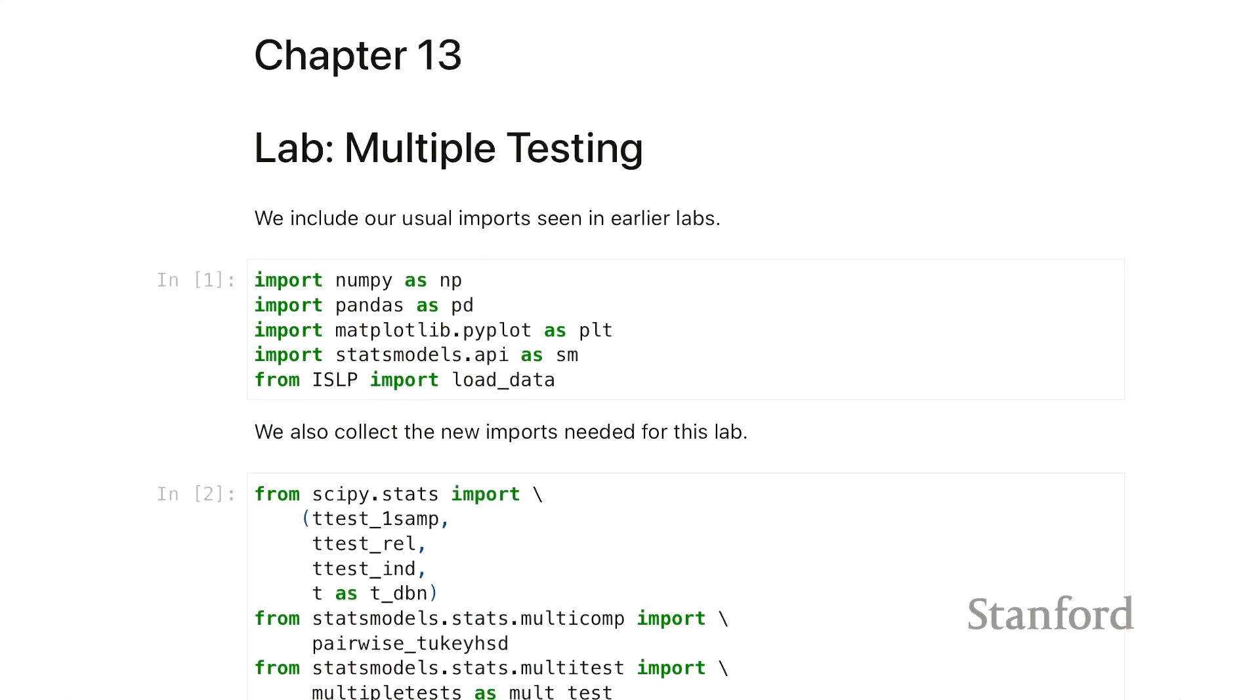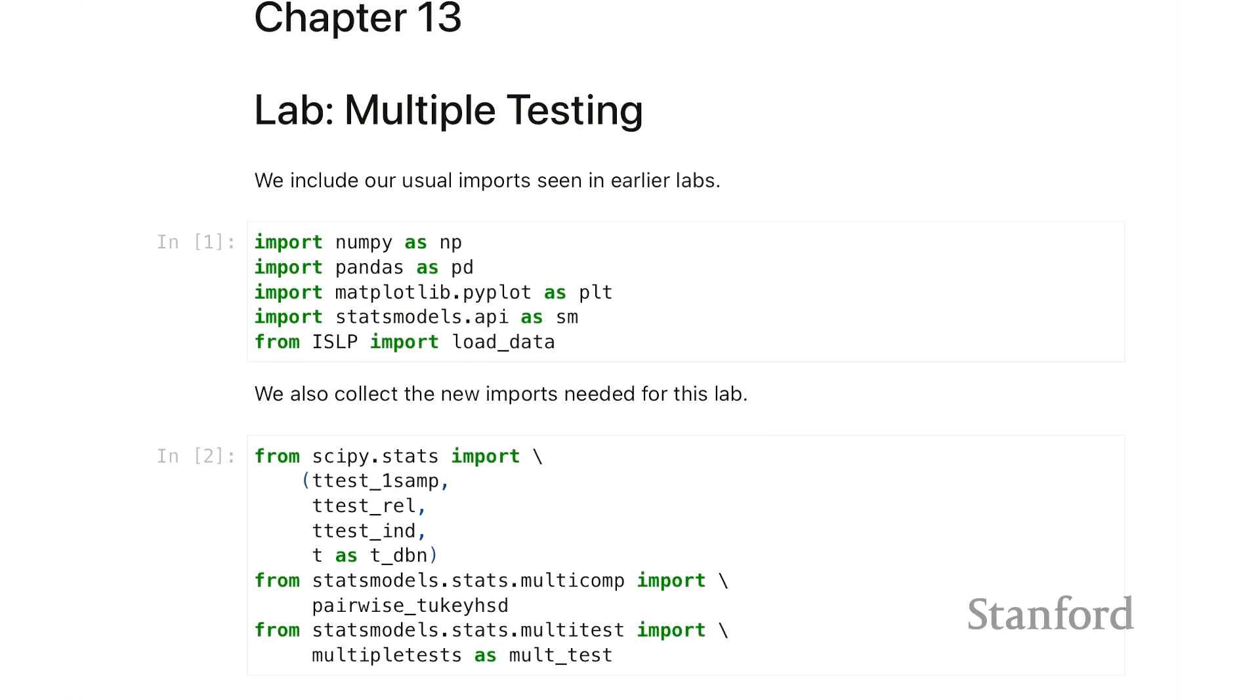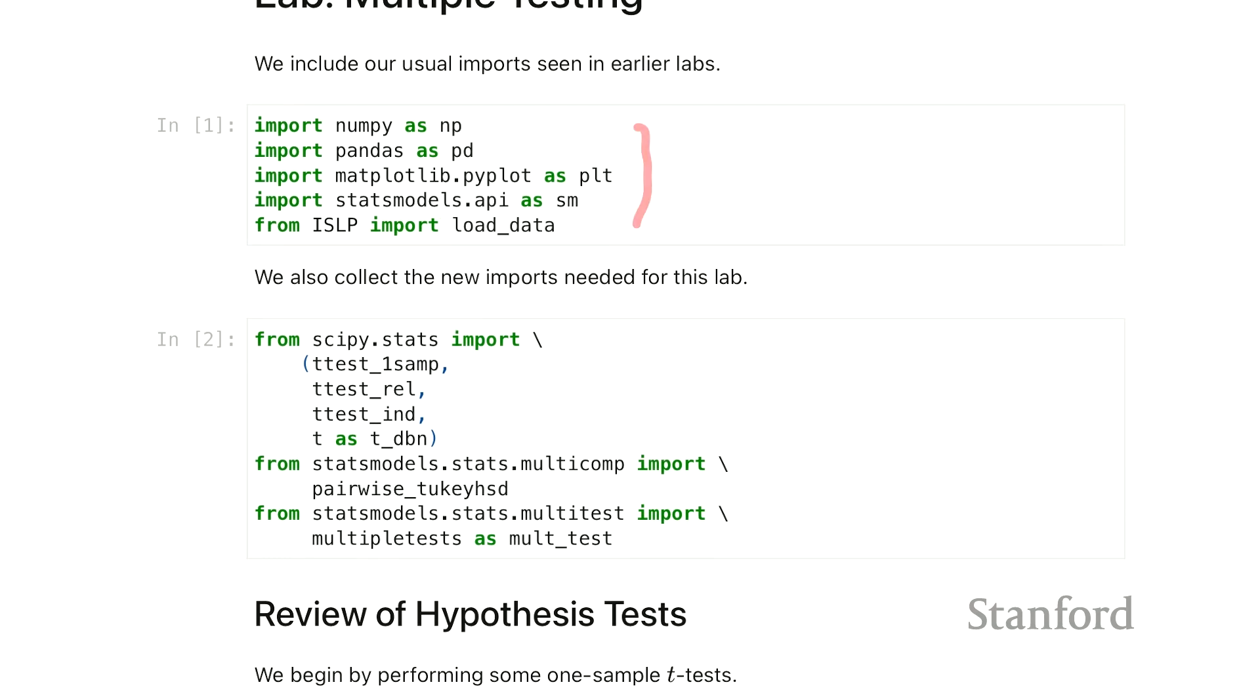As usual we have our standard imports. These are all familiar by now. And then we have a few new ones. Most of the new ones are these t-test functions from the SciPy Stats package. We'll use this multiple test function from the StatsModels package to compute these adjusted p-values.